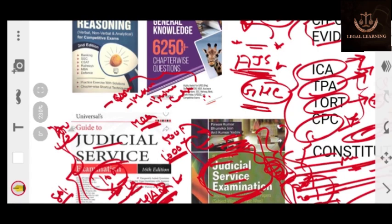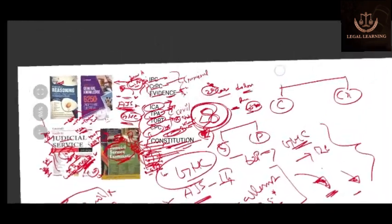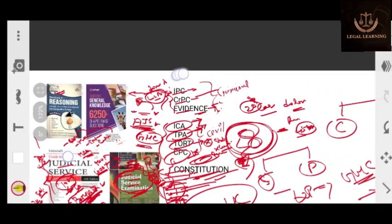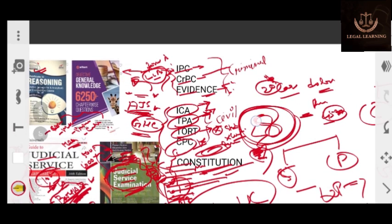Now, if we come to other papers like reasoning and GK, for this Shortcuts to Reasoning is one book. This is Shortcuts to Reasoning by Disha Publication. This book for shortcuts. For reasoning, you have to first of all solve two, three sums only.